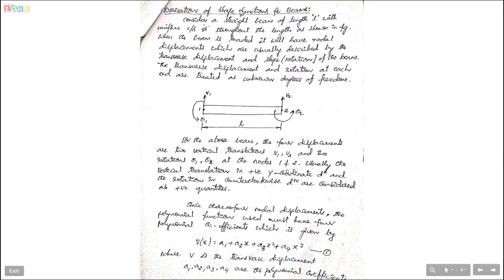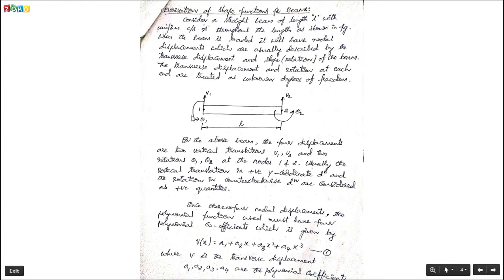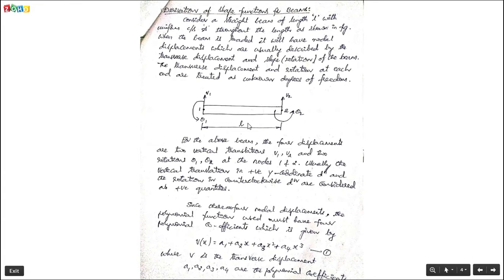Now we discuss the derivation of the shape function for beams. Observe this figure — this is a beam with two nodes: node 1 and node 2. At each node, two displacements are acting. At node 1: vertical displacement V1 and rotational slope θ1 (anticlockwise). At node 2: vertical displacement V2 and slope θ2 (anticlockwise). So totally four parameters are acting: V1, θ1, V2, and θ2. The beam has length L and cross-sectional area A. Since we have four displacement parameters, we consider a cubic polynomial equation: V(x) = A1 + A2·x + A3·x² + A4·x³.